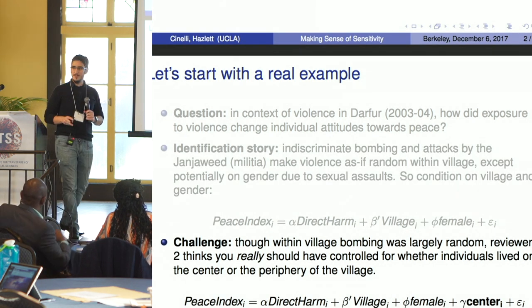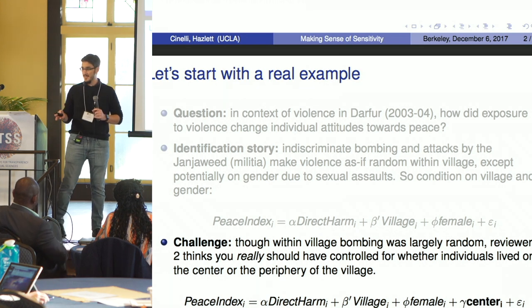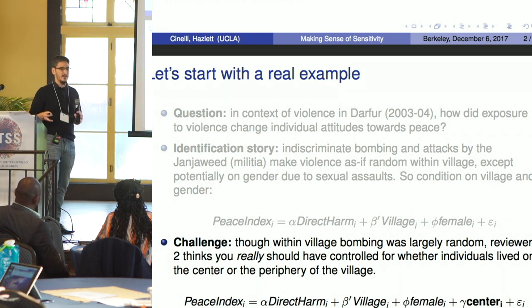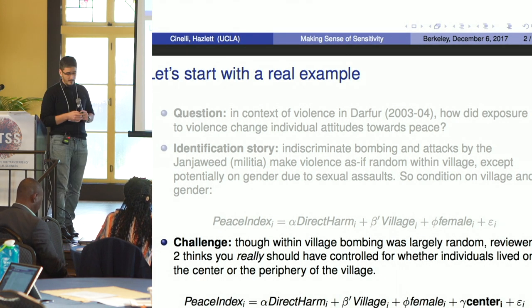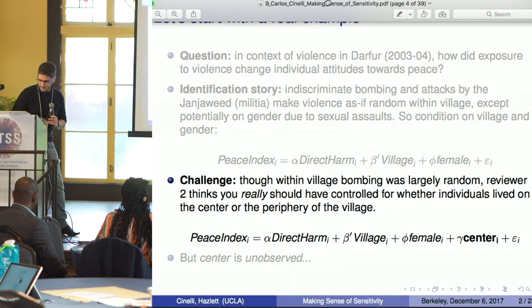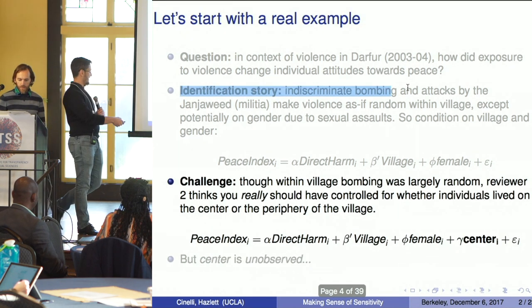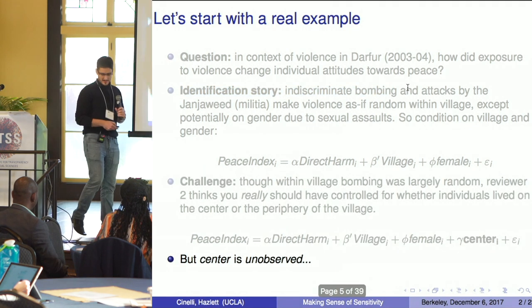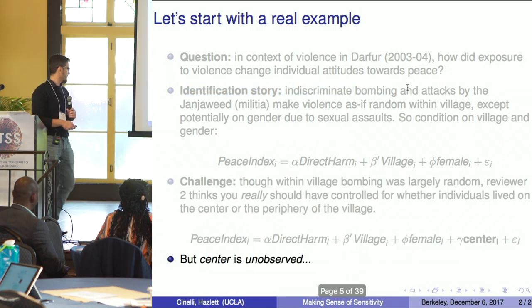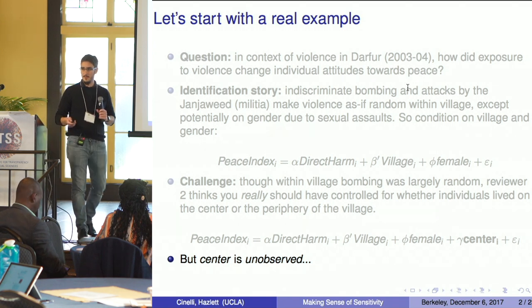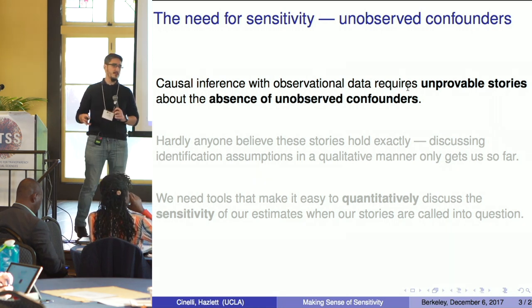But when you submit your publication to the journal, reviewer 2 thinks you should have controlled for whether someone lives at the center of the village, because people at the center are more likely to be attacked and are also systematically different with different attitudes toward peace. So you should have controlled for that — but center is not observed. What can you do now?